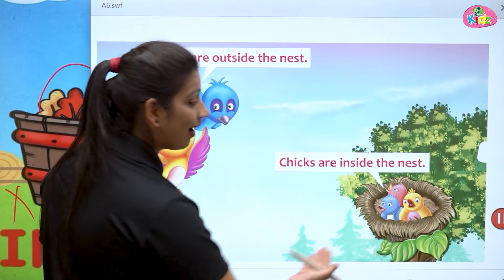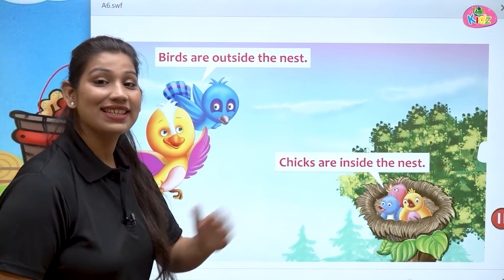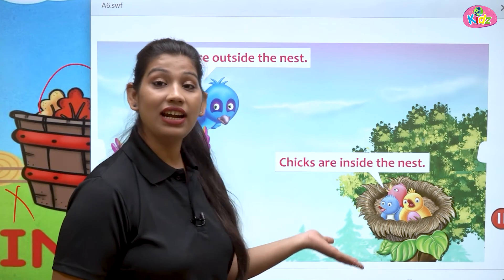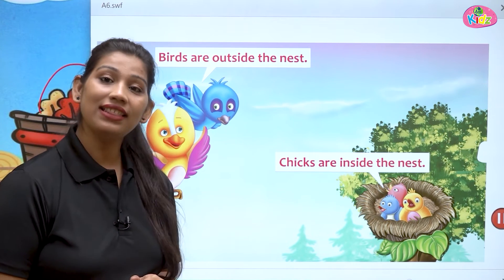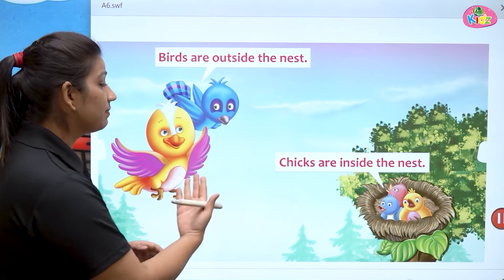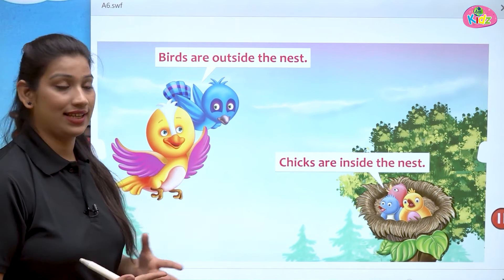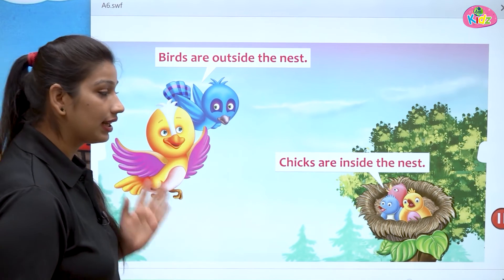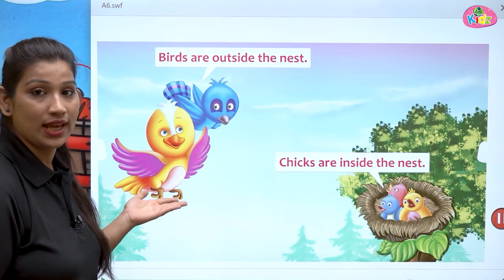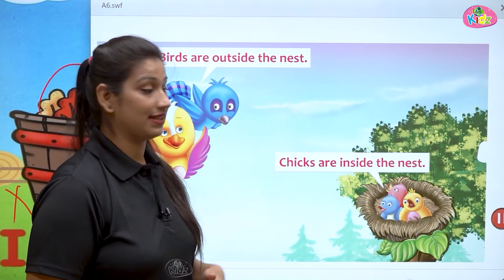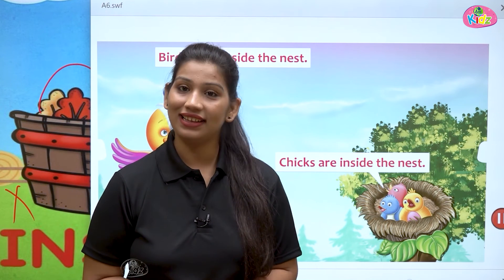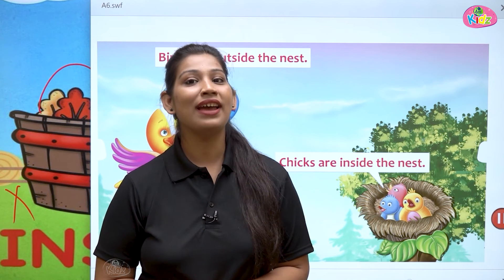These chicks are inside the nest — chicks are the babies of these birds, and these babies are inside the nest. Yeh toh nest ke under hain. Nest in ka house hai aur yeh apne house ke under hain. But these birds are outside the nest — yeh nest ke baahar hai. These are inside, these are outside. Birds are outside the nest, chicks are inside the nest. Inside matlab hota hai under, outside matlab hota hai baahar.